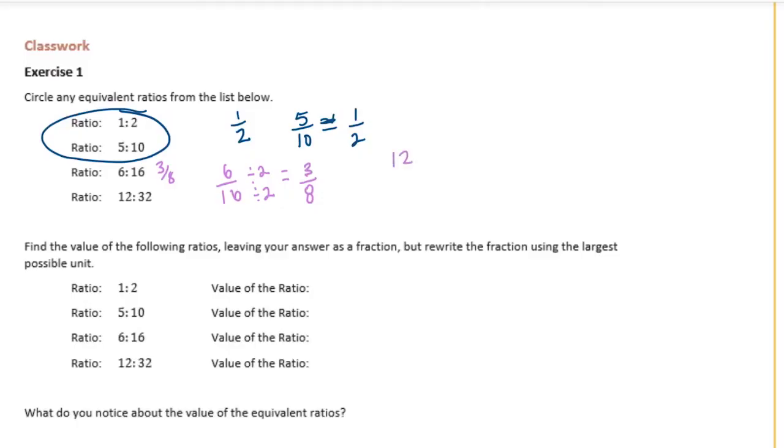Let's try 12 to 32. I can divide both 12 and 32 by 4. So 12 divided by 4 is 3, and 32 divided by 4 is 8, so this is also equal to 3 eighths. So these two are equivalent ratios.